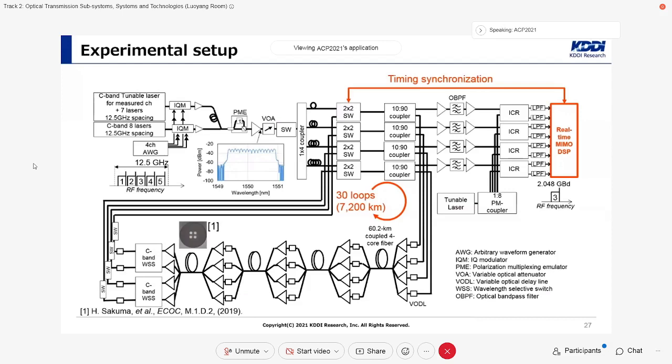The WDM signal was split into four paths with a relative delay of 200 ns between subsequent paths for decorrelation and fed into a recirculating loop system. The transmission line consists of four spans of 60.2 km coupled four-core fiber with fan-in-fan-out device, conventional C-band EDFAs, variable optical delay lines, and two-channel C-band WSS for gain equalization.